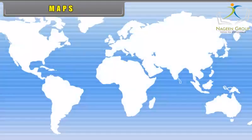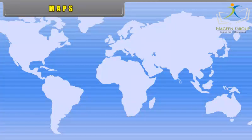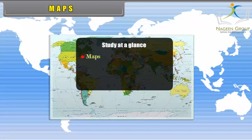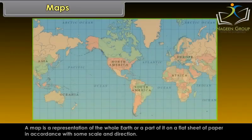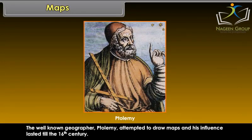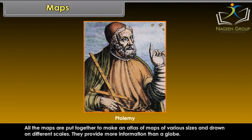The distribution of various phenomena or features on the earth are usually represented on maps which show the whole world or a part of it. A map is a representation of the whole earth or a part of it on a flat sheet of paper in accordance with some scale and direction. The well-known geographer Ptolemy attempted to draw maps and his influence lasted till the 16th century. All the maps are put together to make an atlas of maps of various sizes and drawn on different scales.